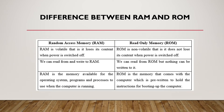The difference between ROM and RAM: RAM is volatile; ROM is non-volatile. We can read from and write to RAM. We can read from ROM but nothing can be written to it. RAM is the memory available for the operating system, programs, and processor to use when the computer is running. ROM is the memory that comes with the computer, which is pre-written to hold the instructions for starting up the computer.